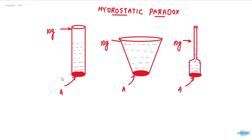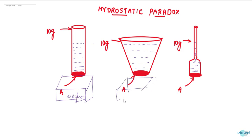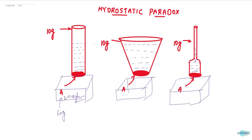If I place each container on a weighing machine, the first one shows 60 grams — that is 50 grams of liquid plus 10 grams of the container. By looking at the second container, we might say it will be more than 60 grams, and the third will be less than 60 grams. But this is wrong — both also show 60 grams.